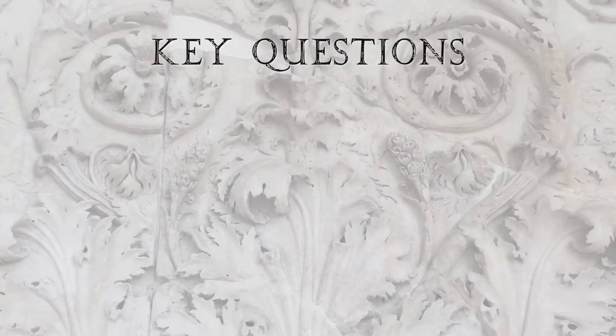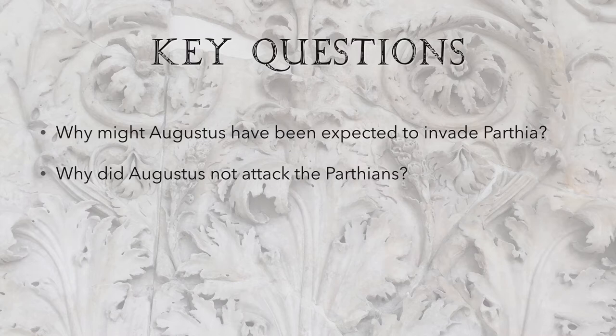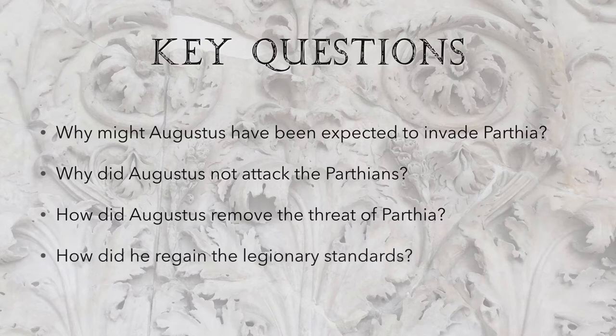The key questions to answer are: number one, why might Augustus have been expected to invade Parthia? Number two, why did Augustus not attack the Parthians? Number three, how did Augustus remove the threat of Parthia? And number four, how did he regain the legionary standards?